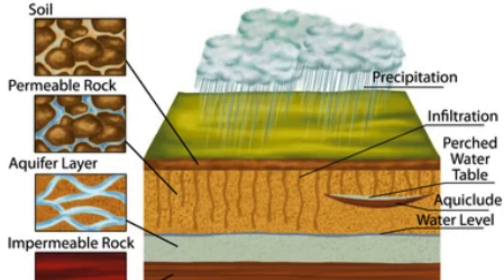Porosity refers to the amount of open space, or voids, in a rock or sediment. These voids can be filled with air or water, and are typically measured as a percentage of the total volume of the rock or sediment. Porosity is an important property in hydrogeology because it determines the amount of water that can be stored within a given volume of rock or sediment.